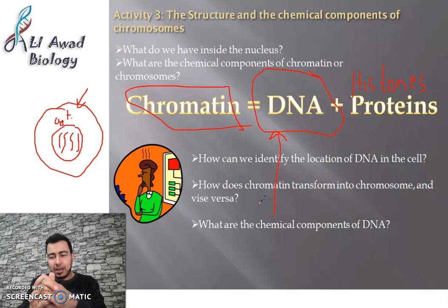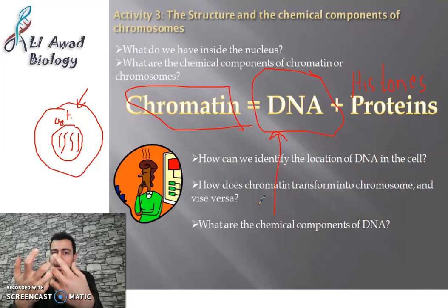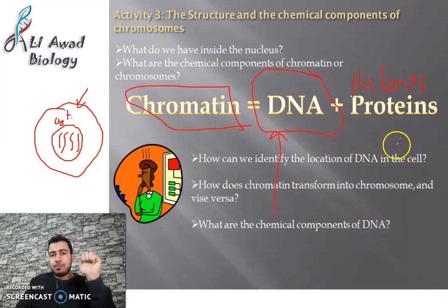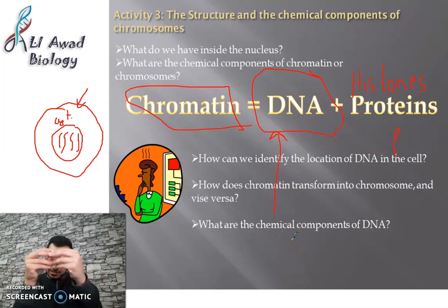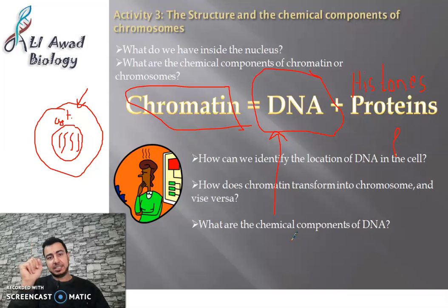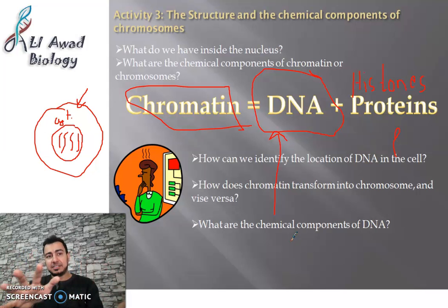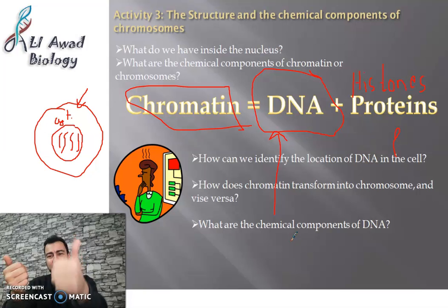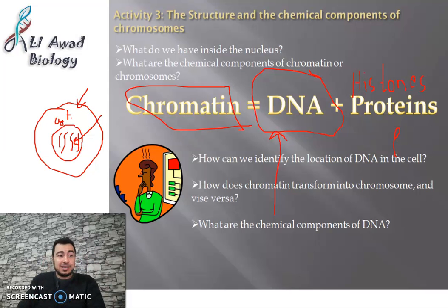How can we identify the presence of DNA in a cell? Scientists tell us where DNA is found in the cell. We will also discuss in this activity how the thin chromatin filament transforms into a chromosome, and what are the chemical components of DNA and how it carries genetic information. All of this is an introduction. Now let's talk about DNA — where do we find DNA? Simply, the chromatin or chromosome are made up of DNA and histones, and they are found in the nucleus. So we find DNA in the nucleus.